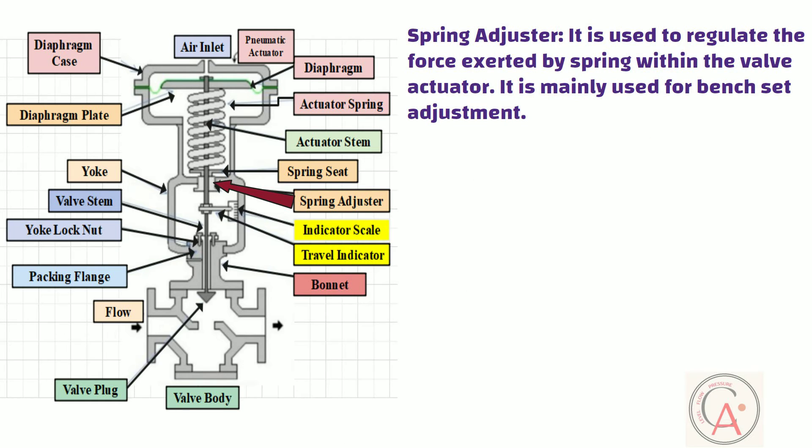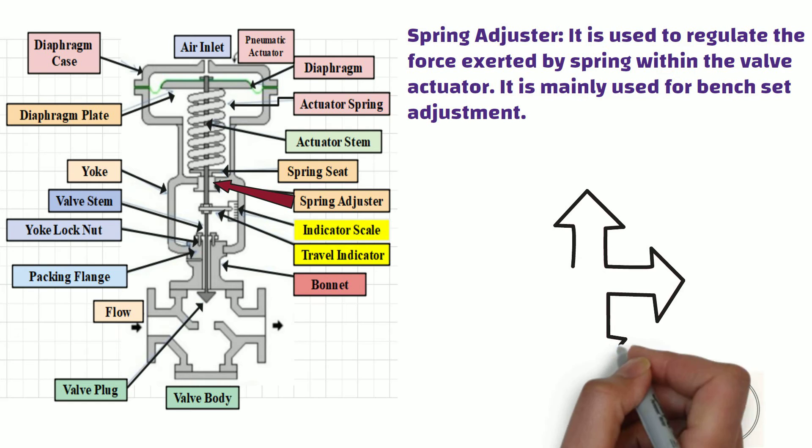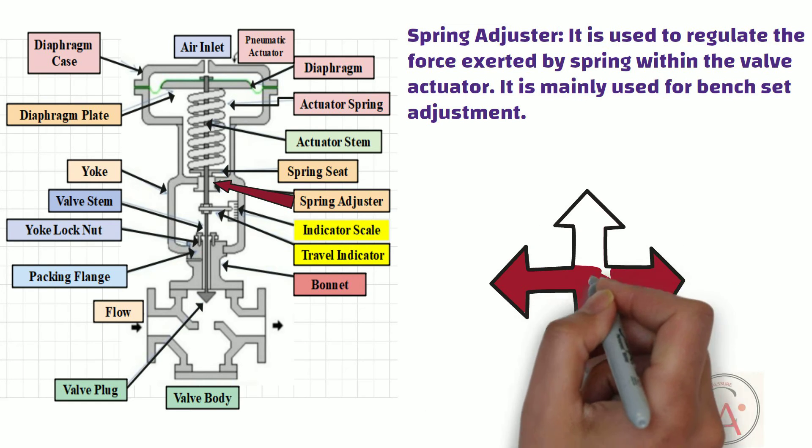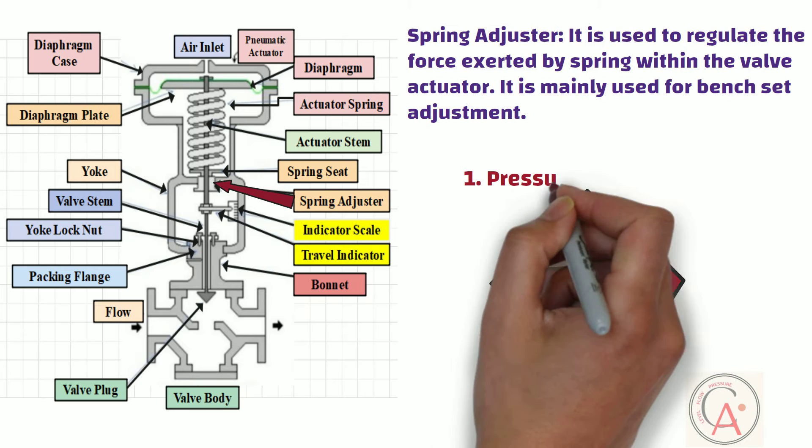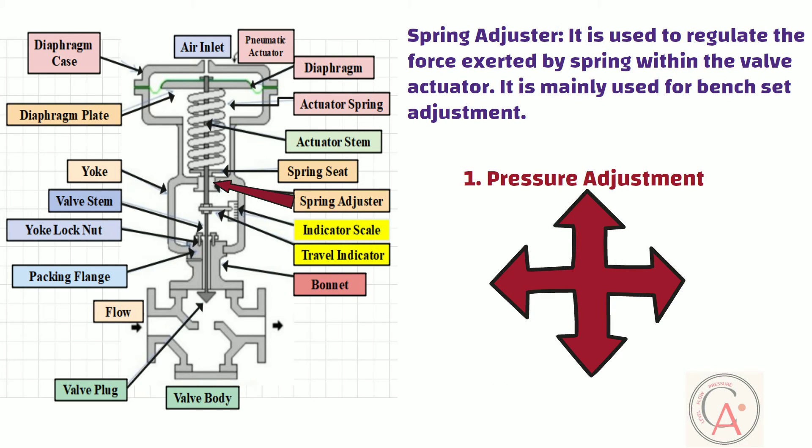By turning the spring adjuster, we can change the actuator response. There are mainly four functions of the spring adjuster. First of all, it can be used for pressure adjustment. By turning the spring adjuster nut, the technician can increase or decrease the force exerted by the spring. This adjustment is essential for calibrating the valve to specific operating conditions such as different flow rates or pressure levels.